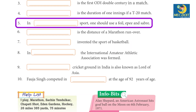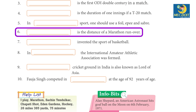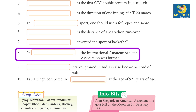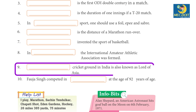4. 75 minutes is the duration of one innings of a T20 match. 5. In fencing, one should use a foil, épée, and sabre. 6. 26 miles 385 yards is the distance of a marathon run. 7. Dr. James Naismith invented the sport of basketball.